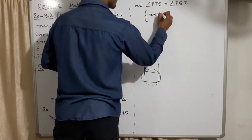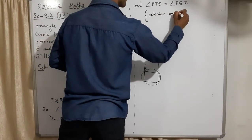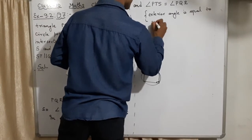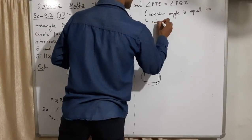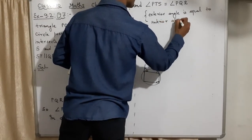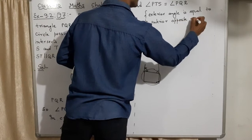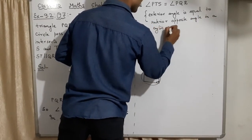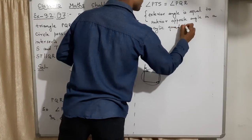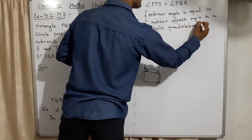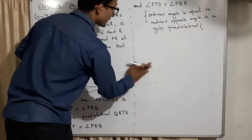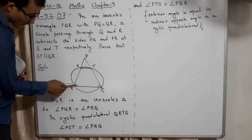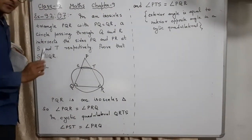The reason is: the exterior angle is equal to the interior opposite angle in a cyclic quadrilateral. This is why both of these equalities happened. Now, continuing — we wanted to prove these two angles are equal, and then we will know they are corresponding angles.